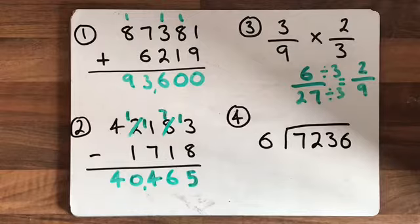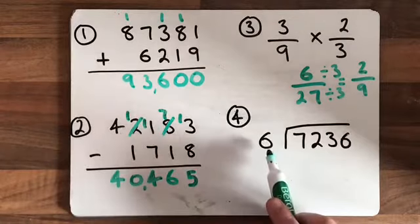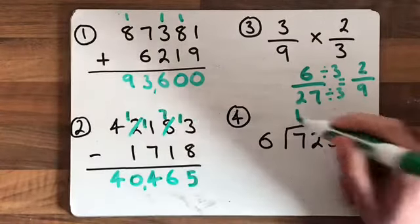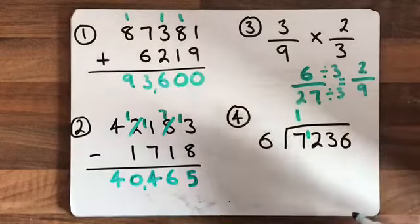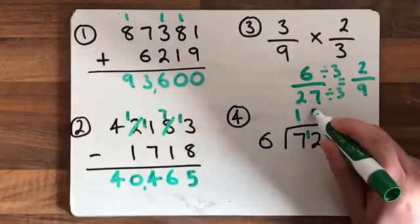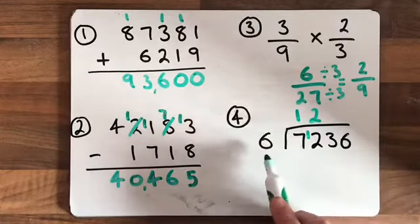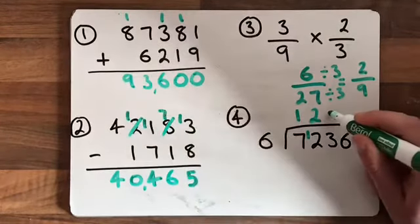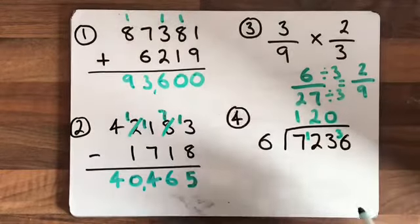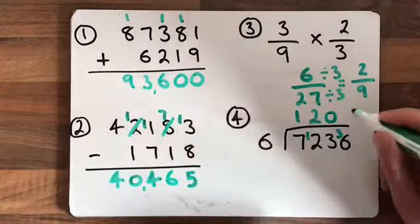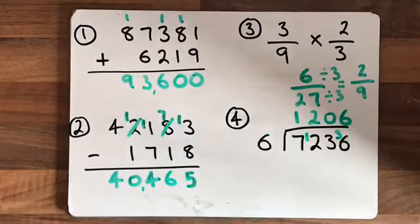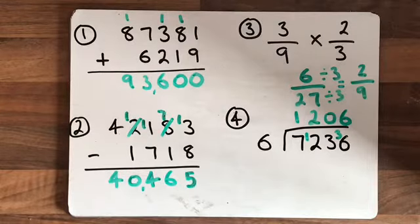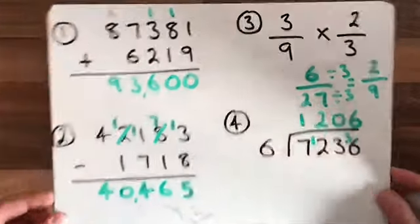Moving on to number four, the final one: the division. It's a short division by one digit. We see how many times six goes into seven — once with one left over. How many times does six go into twelve? Twice, nothing left over. How many times does six go into three? It doesn't, so we write zero and carry the three. How many times does six go into thirty-six? Six times, nothing left over, so there's no remainder. The answer is one thousand, two hundred and six.